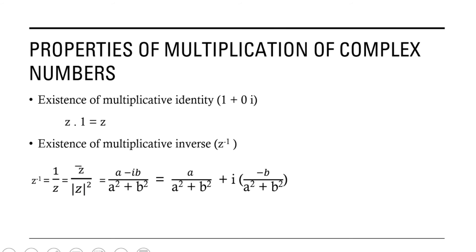The next one is the existence of multiplicative identity. In the real number system the multiplicative identity is 1 — when we multiply any number with it we get the number itself; for example, 3 into 1 equals 3. Similarly, in complex numbers the multiplicative identity is 1 plus 0i. When we multiply any complex number z with 1 plus 0i we get z, so z into 1 equals z.